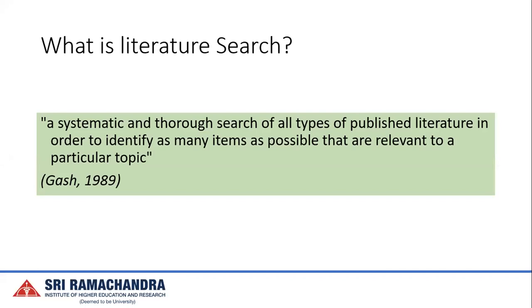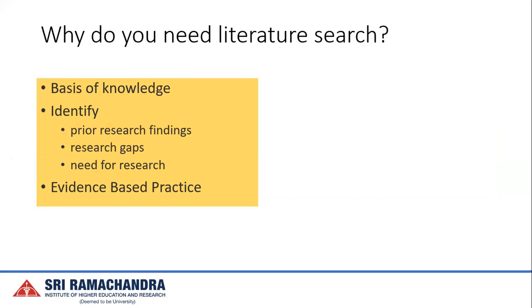What is literature search? There are various definitions, but I personally like this one by Gash: it is a systematic and thorough search of all types of published literature — including gray literature — in order to identify as many items as possible that are relevant to a particular topic. The key word here is systematic.